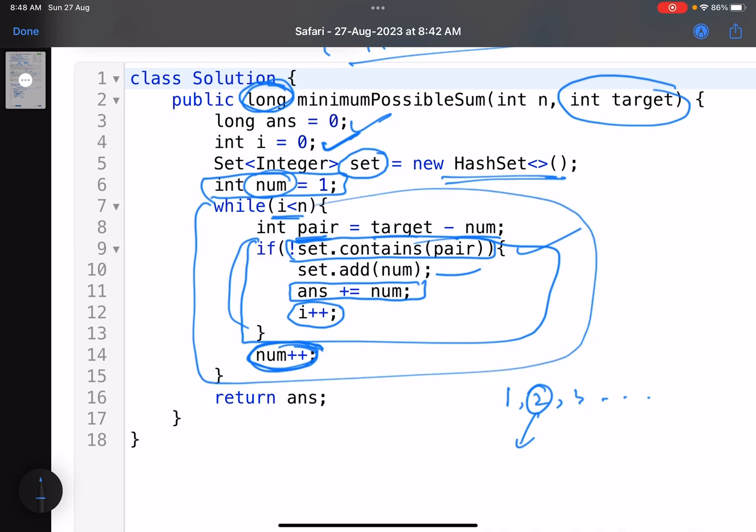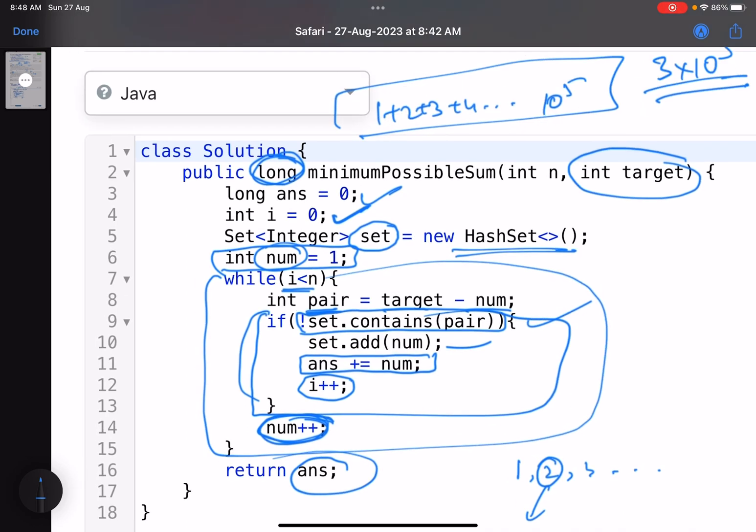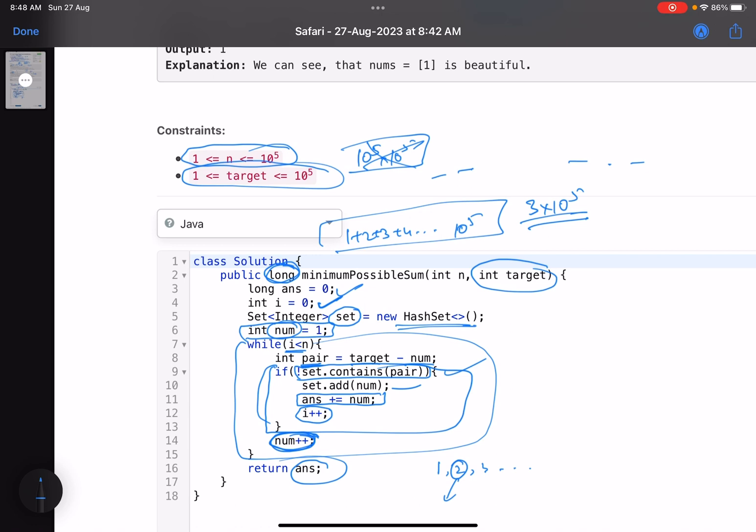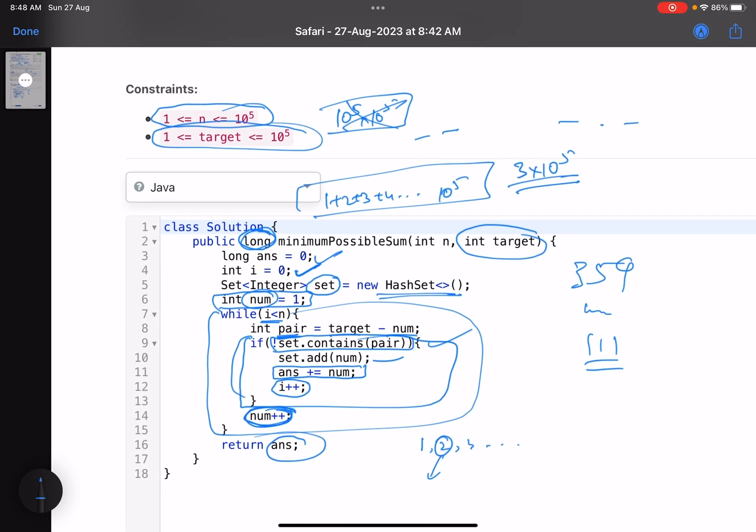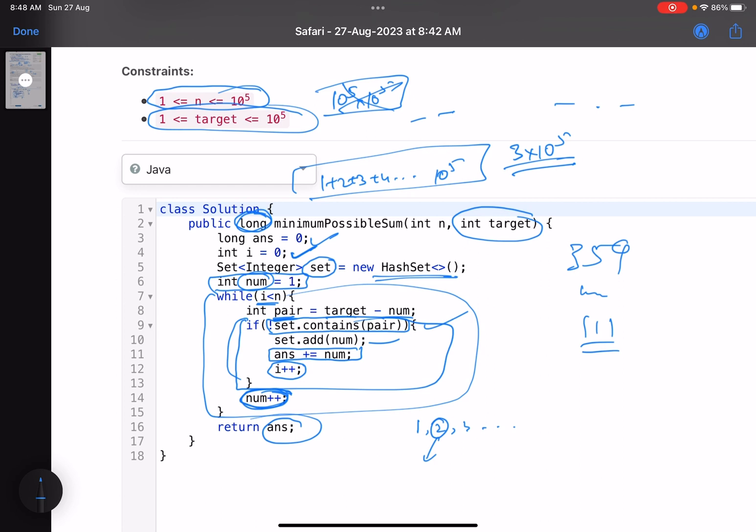As I said, a very similar problem was there in last week's weekly or bi-weekly contest, I don't remember that. You can go and watch contest 359 and the corresponding bi-weekly as well, I think that was 111. So yeah, that's it for the solution. I hope you learned something new from this video. Do support it by giving a thumbs up. Do subscribe to the channel as well. Let me know in case you have any issues related to the solution or the explanation. You can add that in the comment section. I'll revert on each one of them. Thank you, take care, bye.